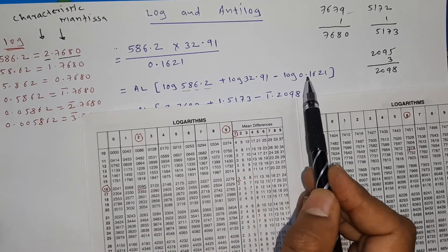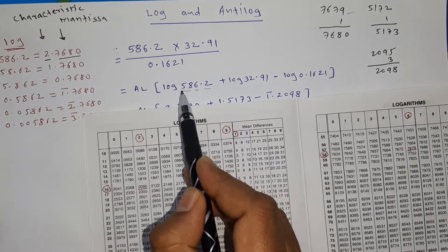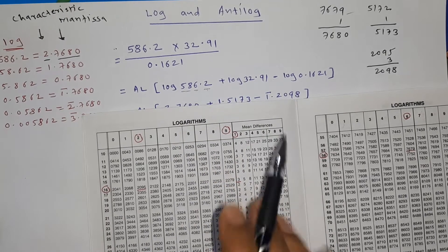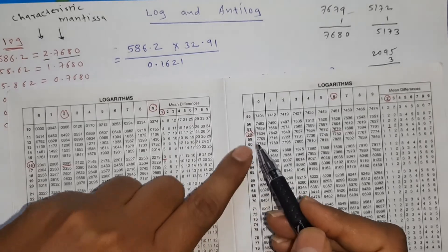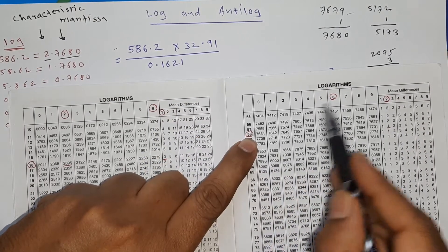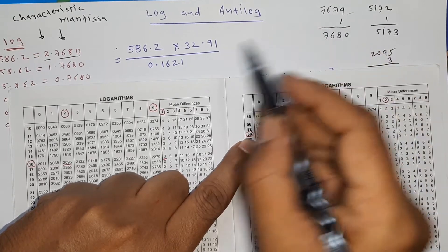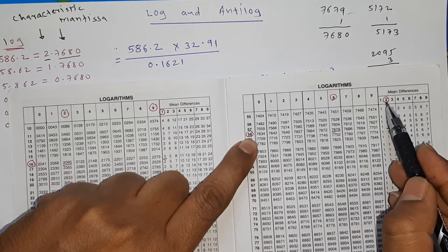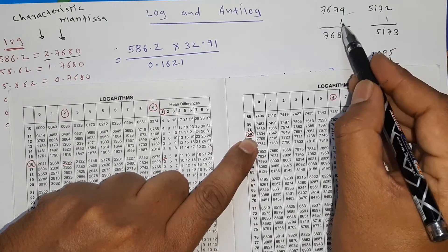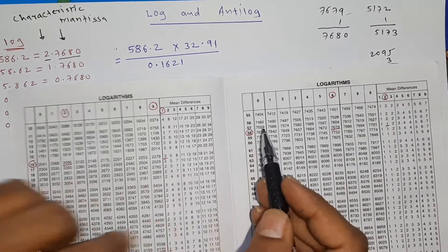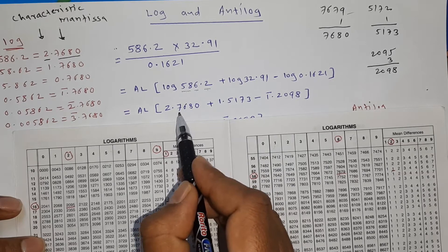You can see log up to four digits — the first two digits, then the third digit, then the fourth digit. For 586.2, the first two digits are 58. In the log table at row 58, the third digit is 6, giving 7679. The fourth digit is 2, so in the mean difference column under 2 for row 58 we get 1. So 7679 + 1 = 7680. Therefore log of 586.2 has a mantissa of 7680.